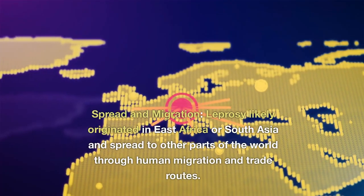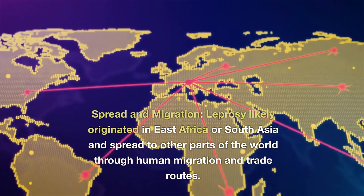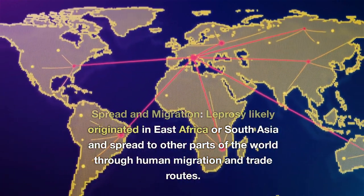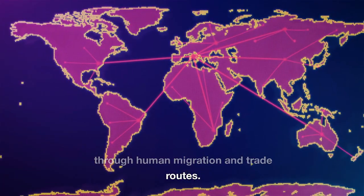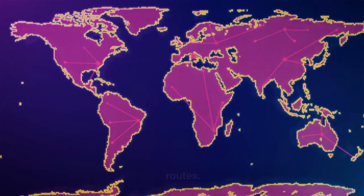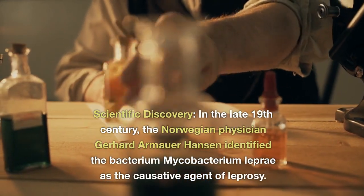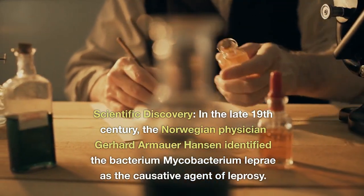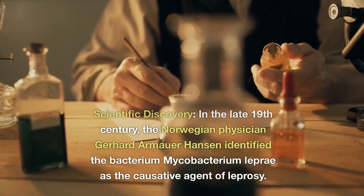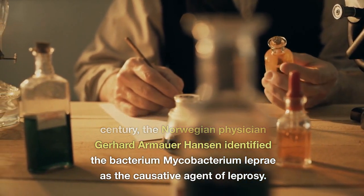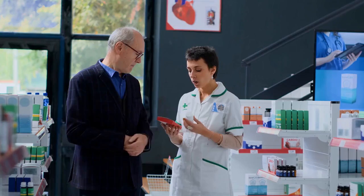Spread and Migration. Leprosy likely originated in East Africa or South Asia and spread to other parts of the world through human migration and trade routes. Scientific Discovery. In the late 19th century, the Norwegian physician Gerhard Armour Hansen identified the bacterium Mycobacterium leprae as the causative agent of leprosy.